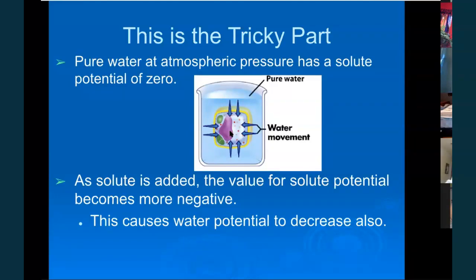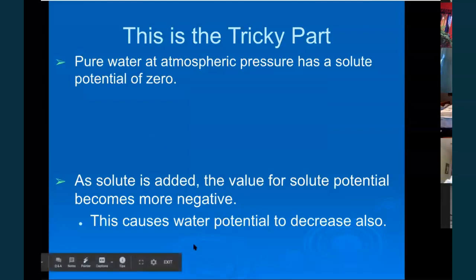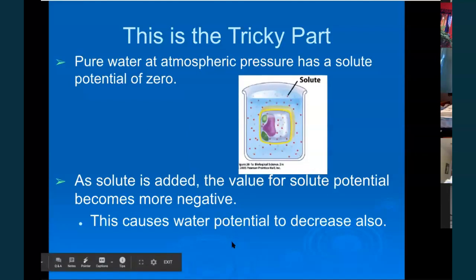Negative two is greater than negative four as a value — that's what I think is confusing when comparing negative numbers. Any solute you add — solutes attract water to them — that's going to decrease the water potential because water is less likely to move away from its solutes.